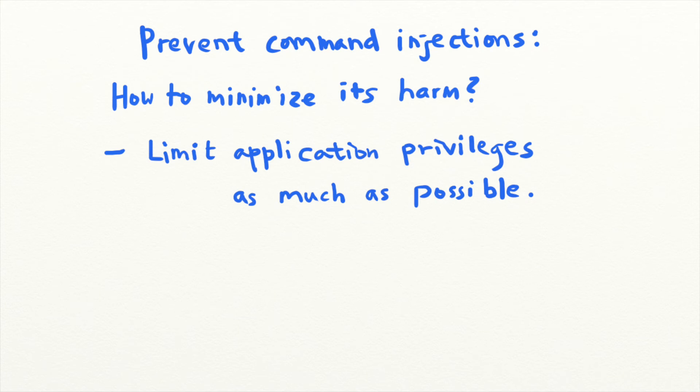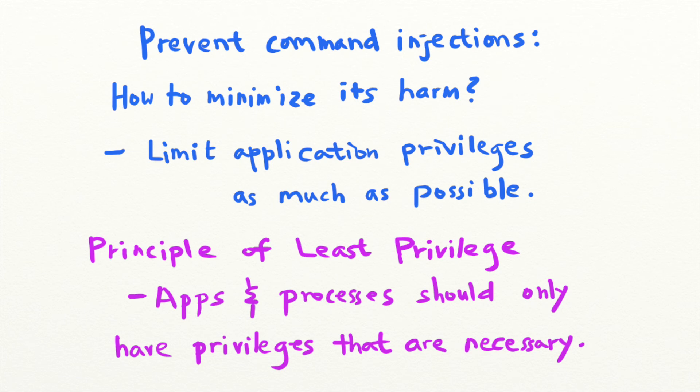The principle of least privilege states that applications and processes should only be granted the privileges that they require to complete their tasks. It is a best practice that lowers the risk of system compromise during an attack because attackers won't be able to gain access to sensitive files and operations even if they compromise a low-privileged user or process.